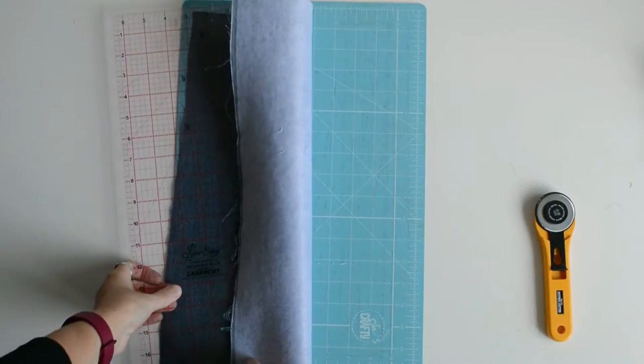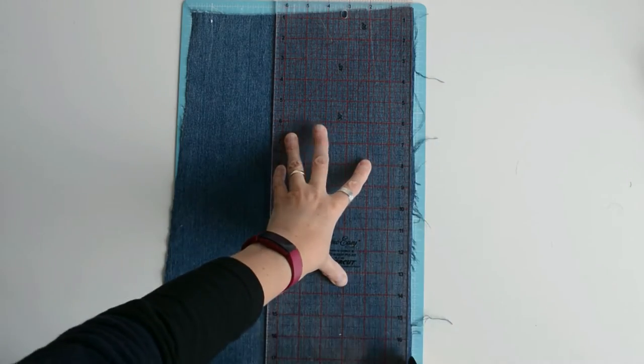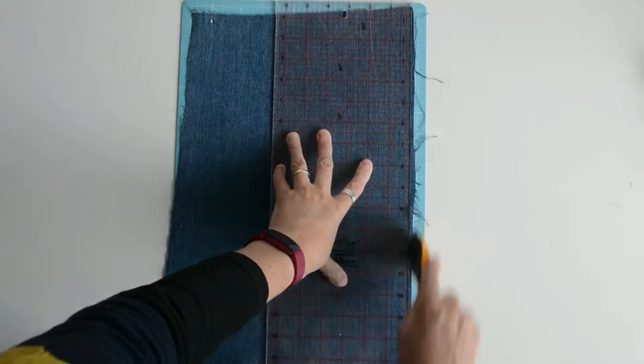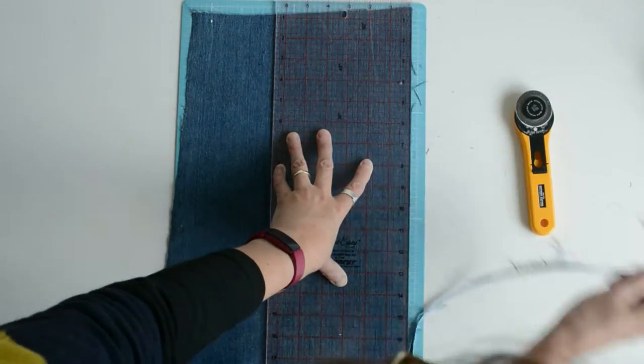Hi, today I'm going to show you how to make some boro-inspired denim coasters. I've got a denim leg here that I've applied some fusible interfacing to. The first thing we're going to do is cut out some squares for the top of our coasters.